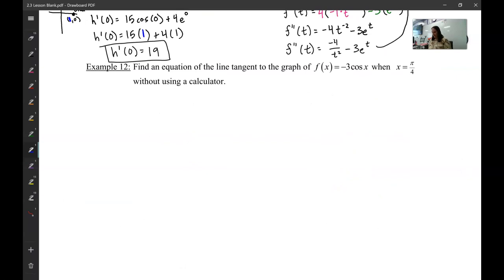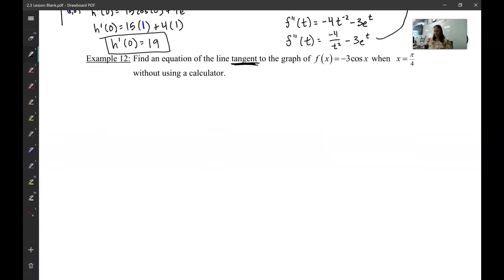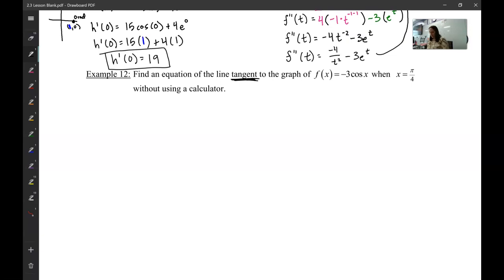Last one. Finding an equation of the line tangent to the graph of this when x equals this. So right here, this keyword, an equation of the line, that should be your red flag.